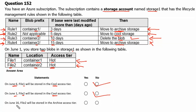Statement 3: On June 16th, file 2 will be stored in archive access tier — yes or no? File 2 is a member of container 2, and after 10 days it will be deleted by rule 3. Therefore it won't be available to move to archive access tier. The answer for this statement is no as well.